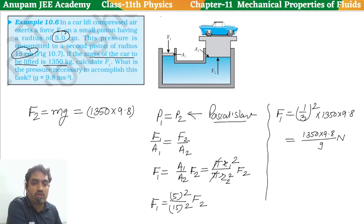So this is 1350 into 9.8 divided by 9 newtons. We will calculate this: 1350 into 9.8 divided by 9. So we get 1470 newtons. Now we need to calculate part B.